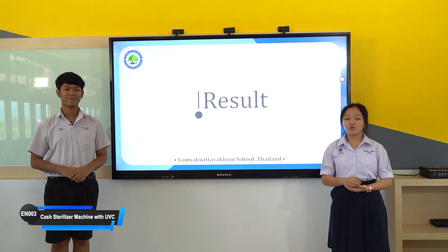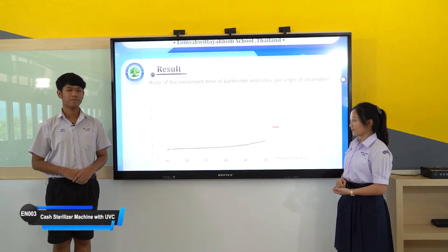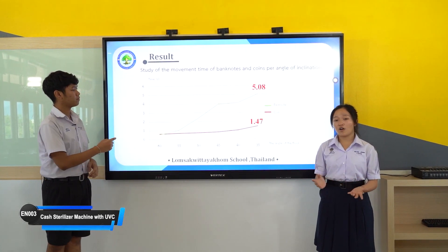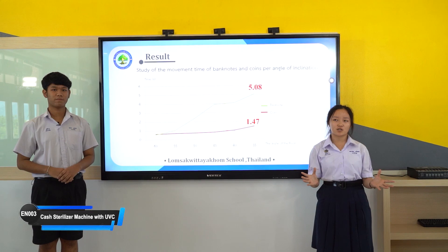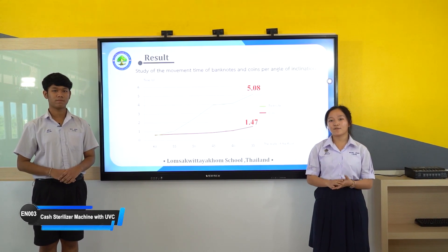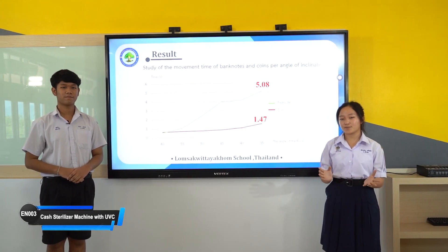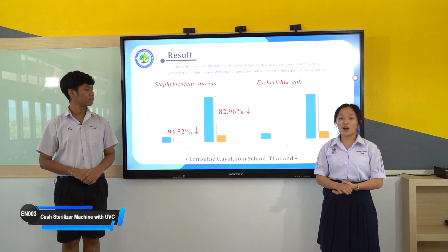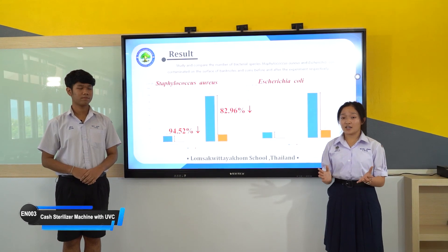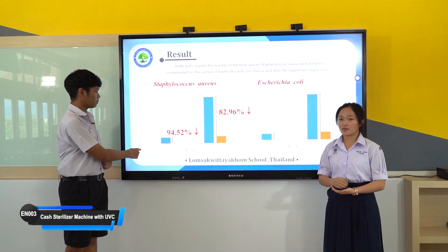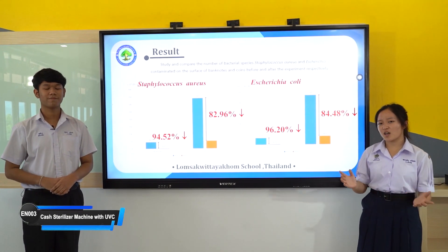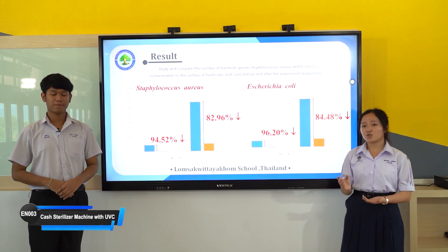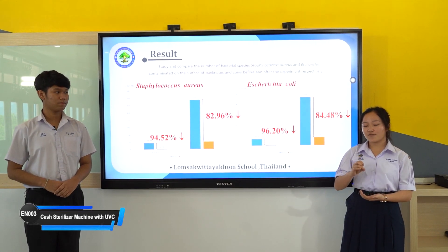Now I will talk about the results of this study. In this graph, we show the S. aureus and E. coli counts on banknotes and coins. It shows the efficiency of our machine to disinfect both bacteria on banknotes and coins by up to 80–90% on average.